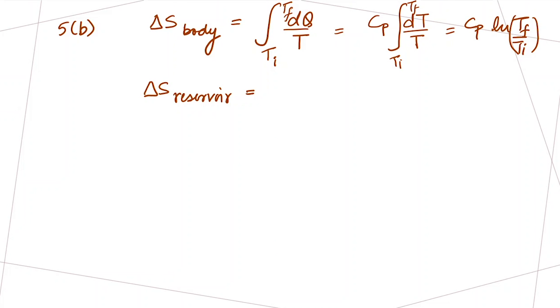Let's find the delta S for the reservoir. The temperature of the reservoir is TF, so this is minus CP delta T over TF, which equals minus CP times (TF minus TI) over TF.